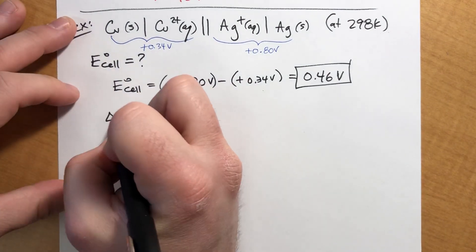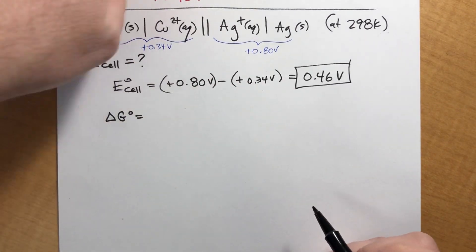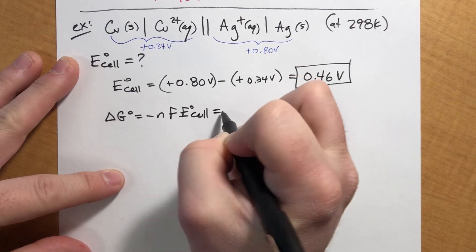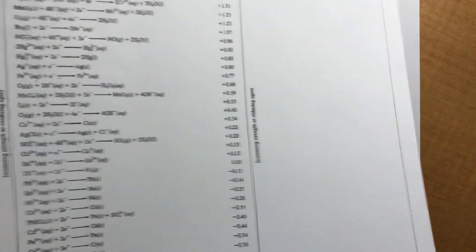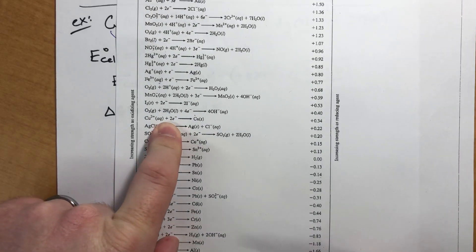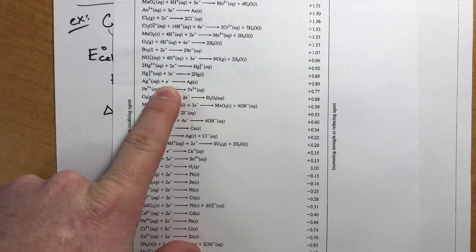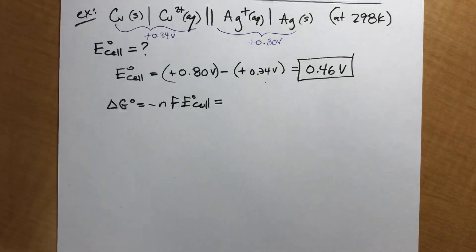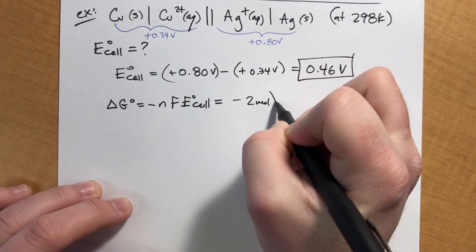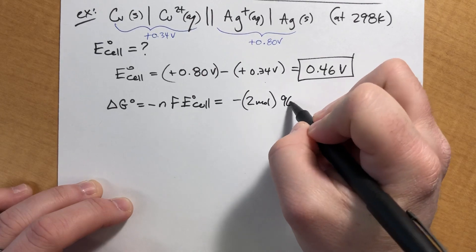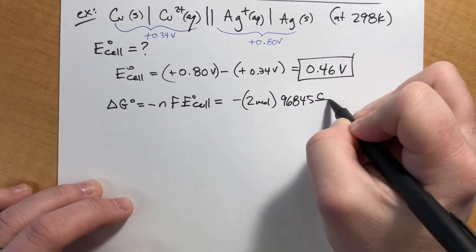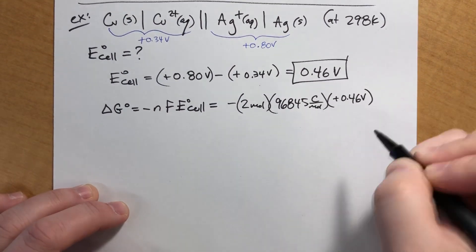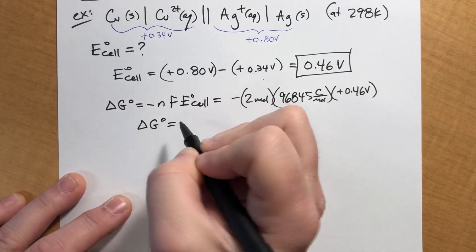Delta G is minus NFE sub cell. We need N. So if we look at the copper half reaction, that has two electrons being exchanged. If we look at the silver half reaction, there's only one. The least common multiple between one and two is two. So that's how many moles of electrons would be exchanged here. F is a constant. And E sub cell we just calculated is positive 0.46 volts.